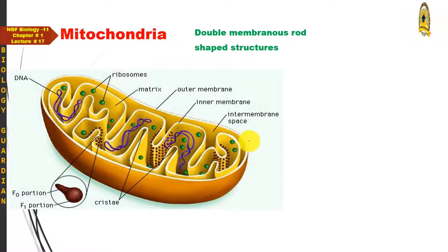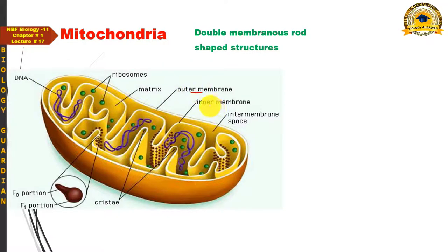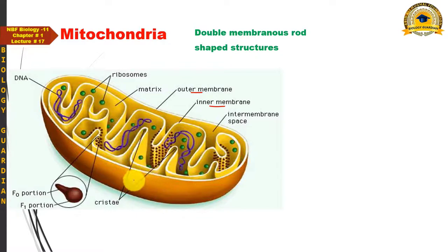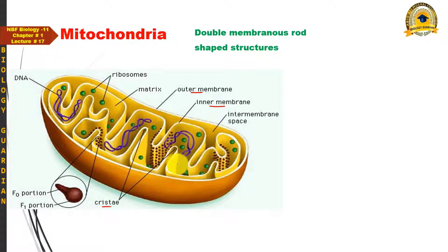The outer membrane smoothly surrounds the mitochondrion as a continuous membrane. In contrast, the inner membrane forms several infoldings towards the inner side of the mitochondrion. The singular of mitochondria is mitochondrion. These infoldings are called cristae. A common MCQ asks: the infoldings or invaginations of the inner mitochondrial membrane are called cristae.